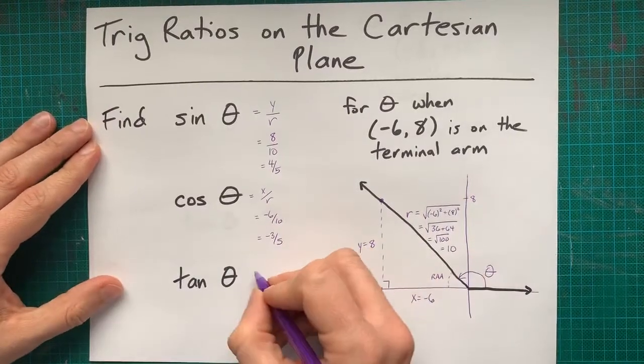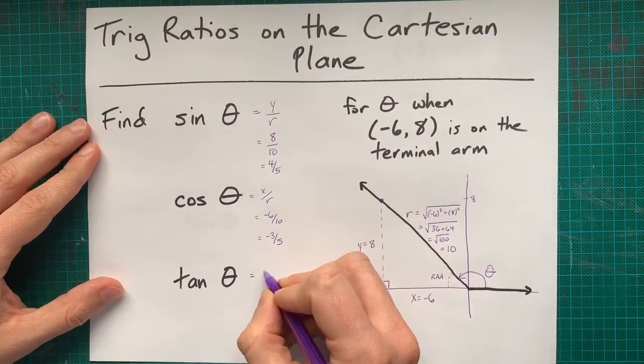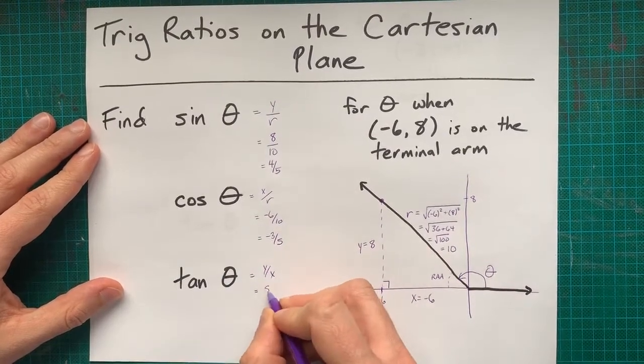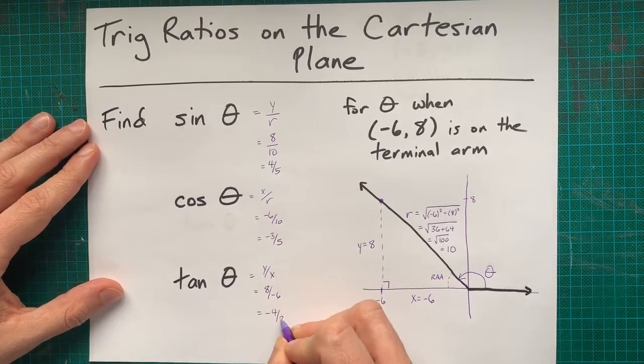And lastly, tan is opposite over adjacent, or y over x. y over x is 8 over negative 6, which reduces to negative 4 thirds.